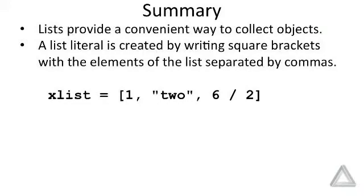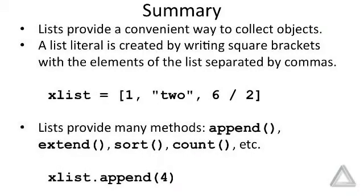So here's an example where we assign to the identifier xList the list literal that has three elements. The first element is the integer 1, the second is the string two, and the third element is the float that is obtained from the expression 6 divided by 2. Lists are objects.